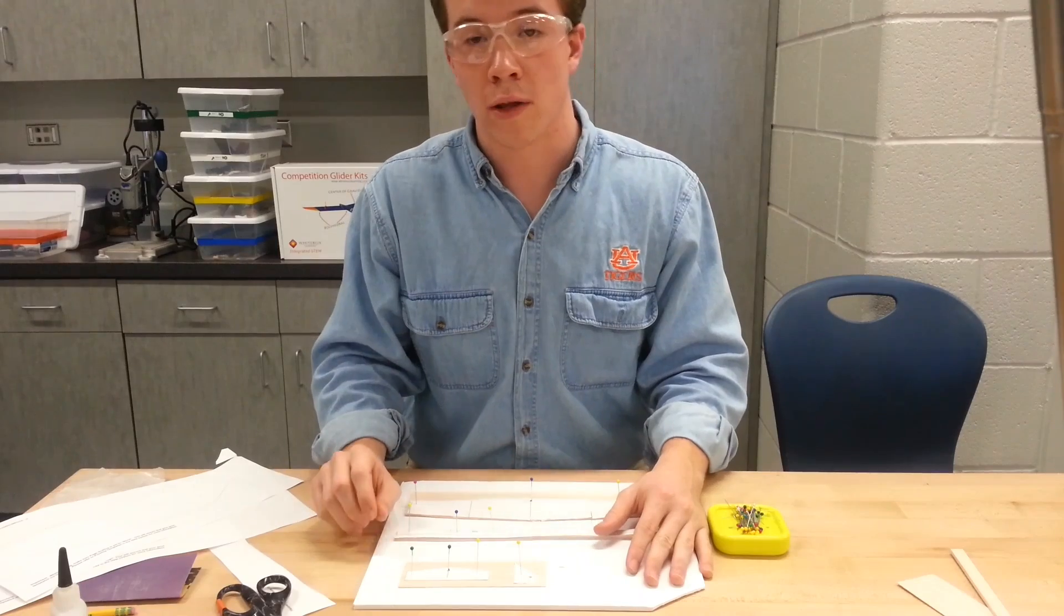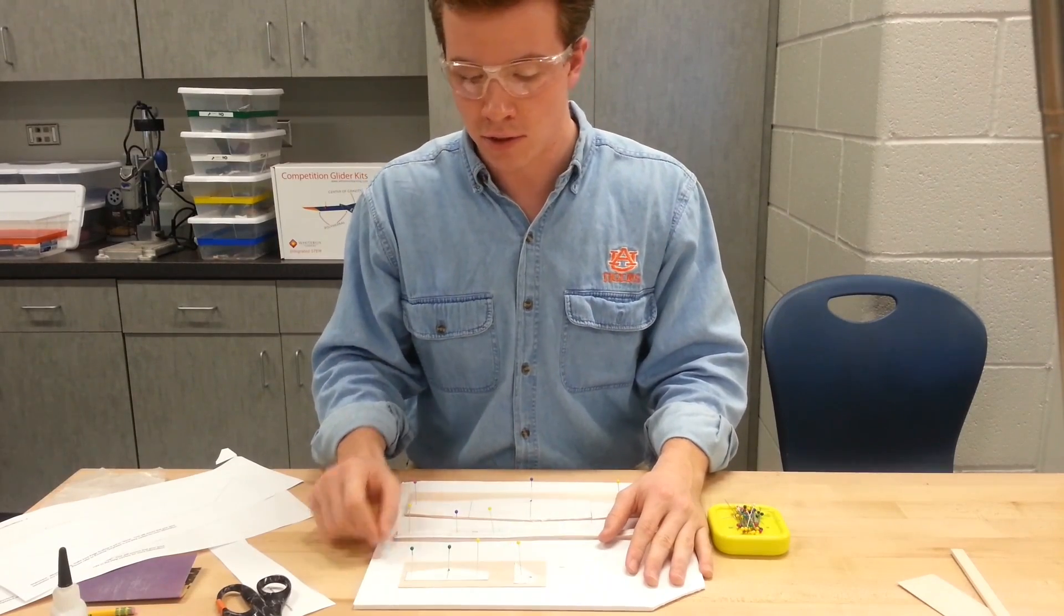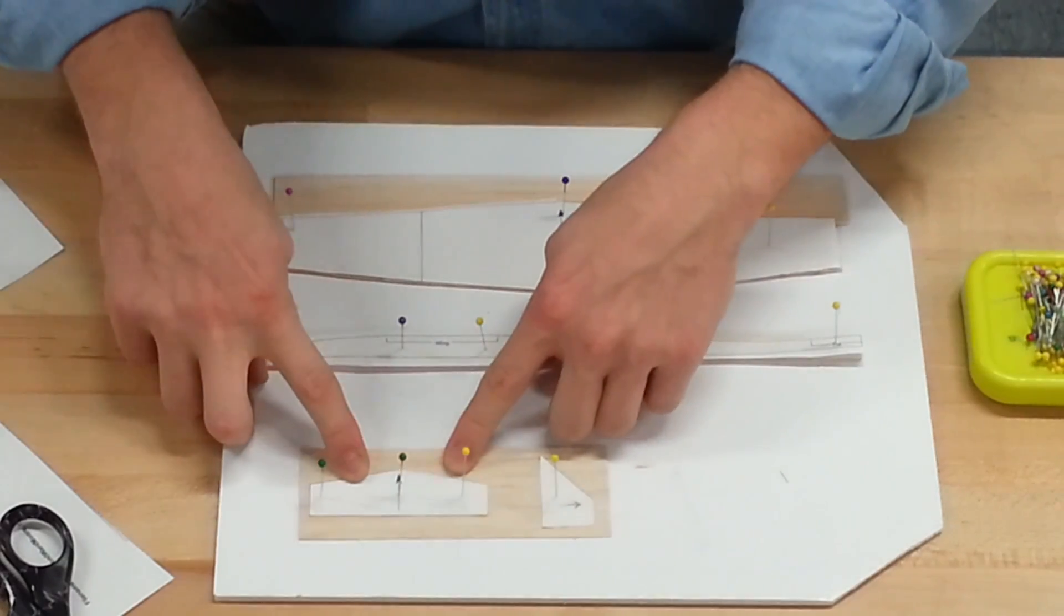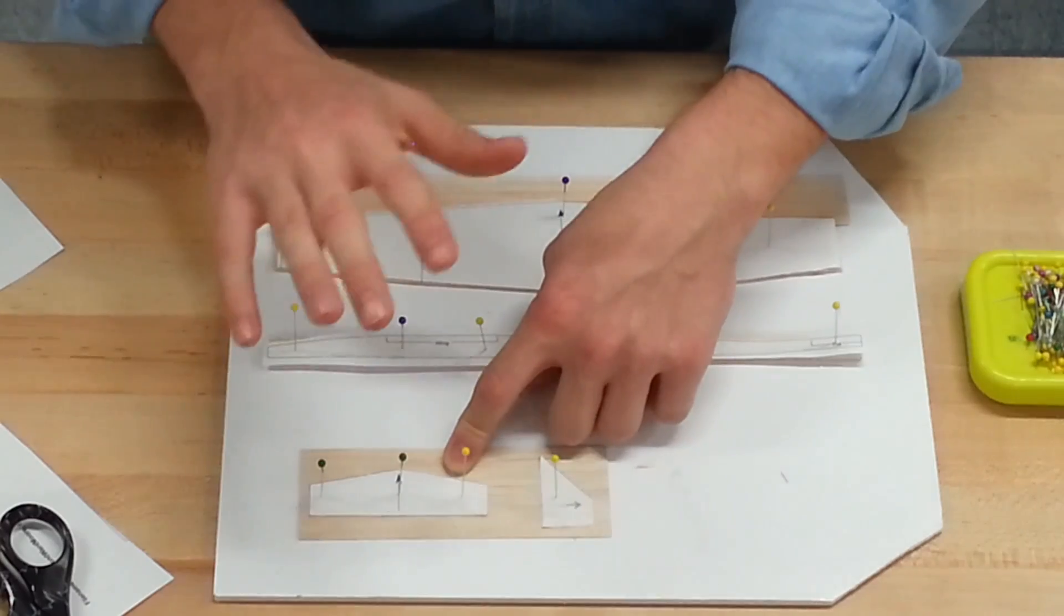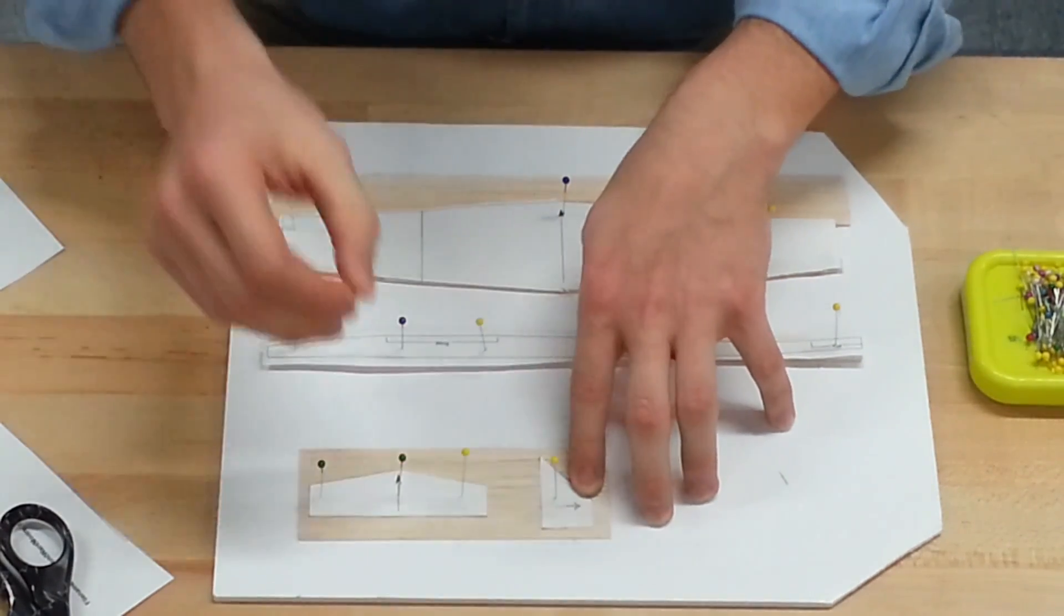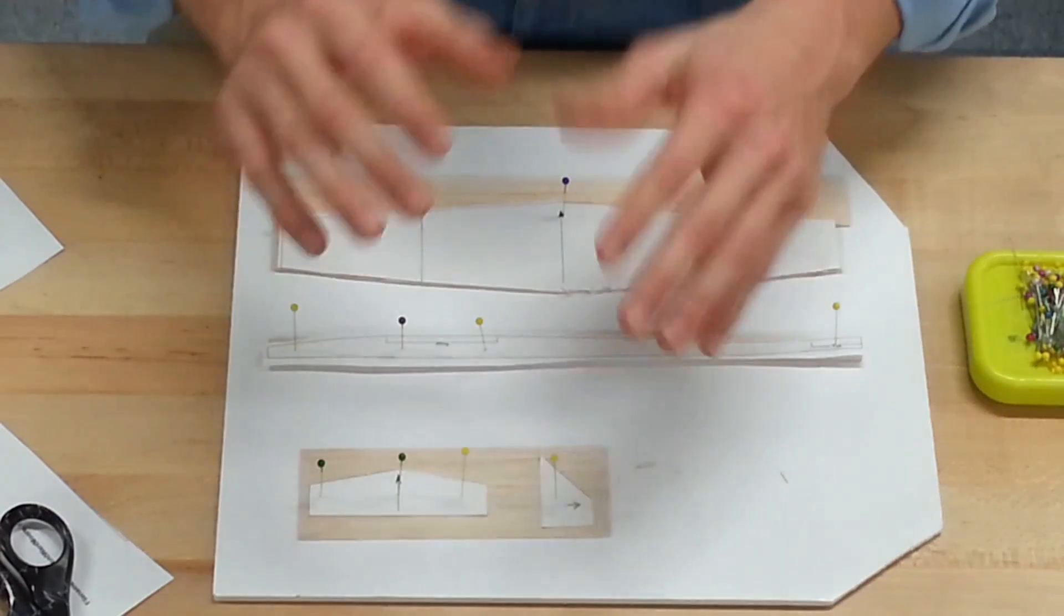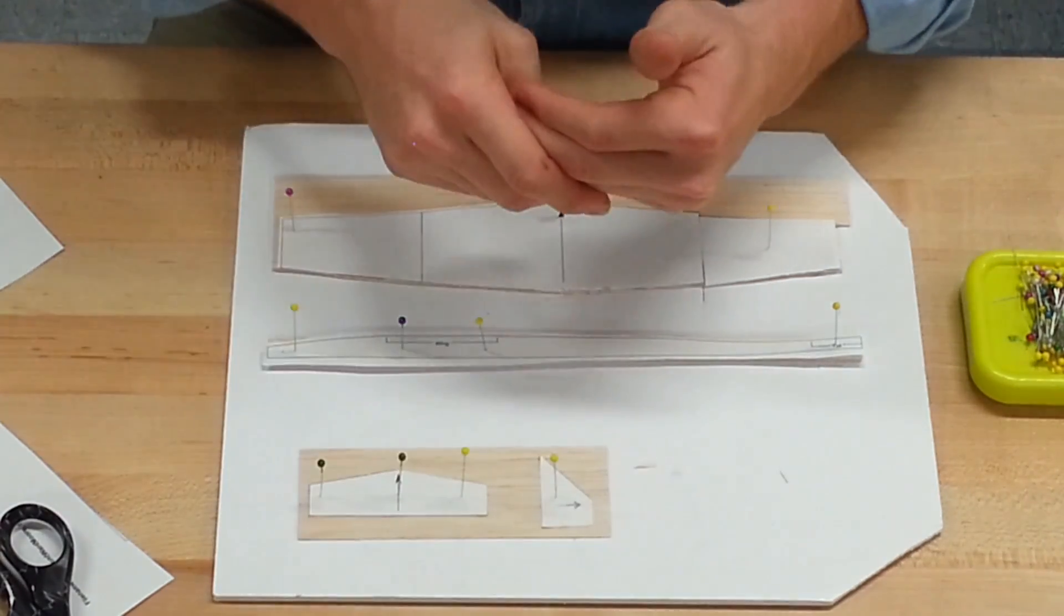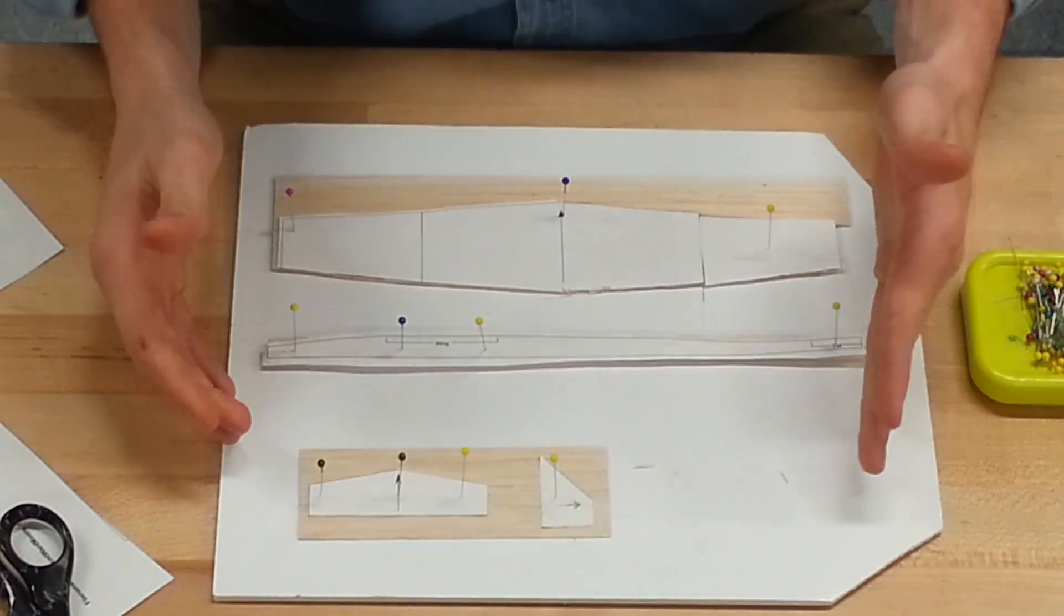One thing we need to note with the vertical and the horizontal stabilizer: we want the horizontal stabilizer to go with the grain so that it has a nice clean cut. We want the vertical stabilizer to go against the grain. That way when we glue it on our plane, it's very stable and not so easy to break as it would be if we cut it with the grain.